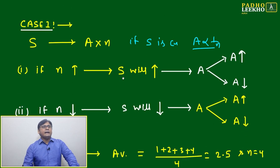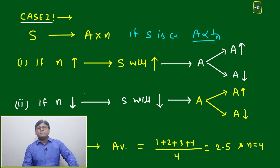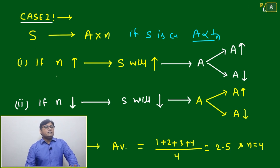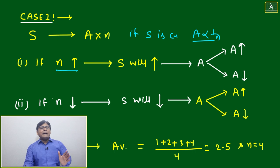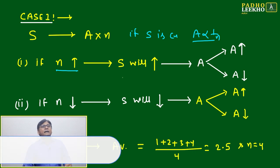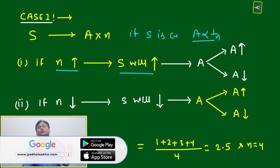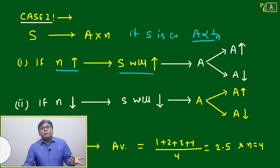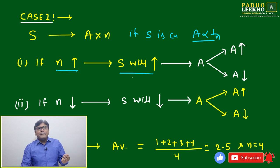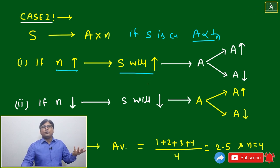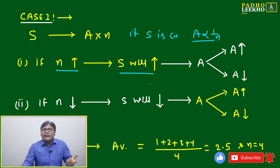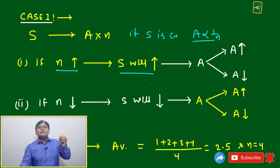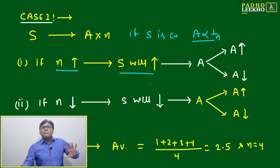Now we'll look at all possibilities among S, A, and n case by case. Case one: if n is increasing. If n increases, then S will surely increase — there is no doubt. Whether you are adding one data point, a group of data, or more than one, the sum will increase. What the value of that data is does not matter — if you are adding, sum will definitely increase.